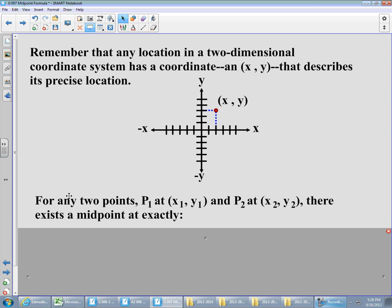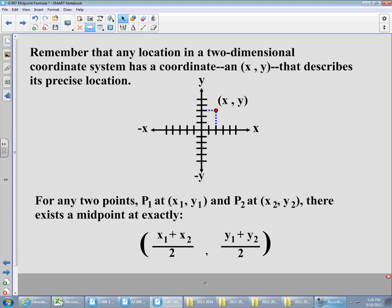So what we're after today, and you're going to see this same language on several different formulas that we're going to use throughout the year. For any two points, point one located at (x1, y1), and point two located at (x2, y2), for those two points, there exists a midpoint that lives exactly at the result of this formula.